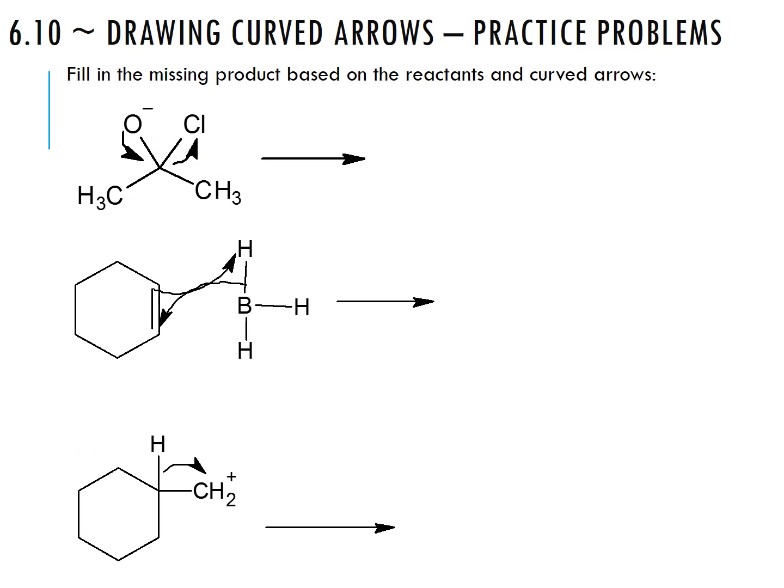In the first example on the next page, we have two arrows: going from the oxygen toward the bond, and then from the bond toward the chlorine. This is loss of a leaving group — the arrow from the oxygen is just part of that flow of electrons, very similar to the last problem on the previous slide but essentially in reverse.